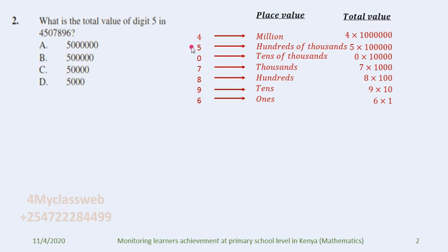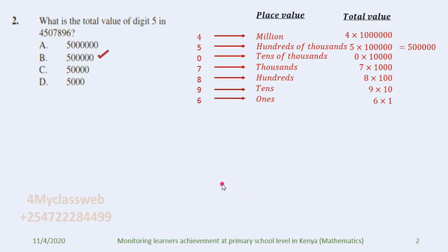Since the digit we are asked about is digit five, we take five and multiply by its place value — one hundred thousand. Five multiplied by a hundred thousand equals five hundred thousand. This is the total value of digit five. Looking back at the choices, answer B is the correct answer. This question gives candidates a chance to demonstrate knowledge of place value and total value.